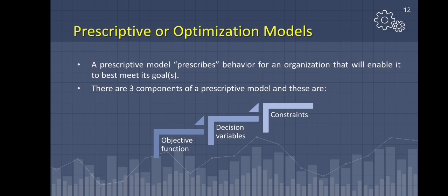The next model is prescriptive or optimization models. A prescriptive model prescribes behavior for an organization to best meet its goals. An optimization model seeks to find values of the decision variables that optimize—maximize or minimize—an objective function among the set of all values for the decision variables that satisfy the given constraints. There are three components of a prescriptive model: objective function, decision variables, and constraints.